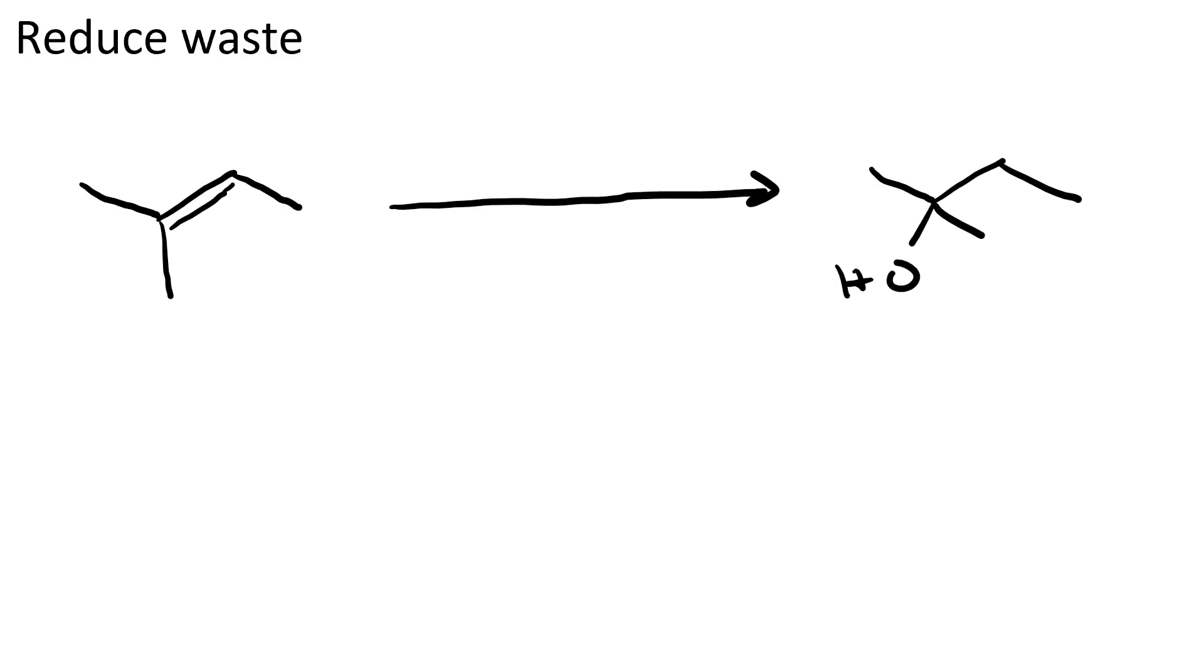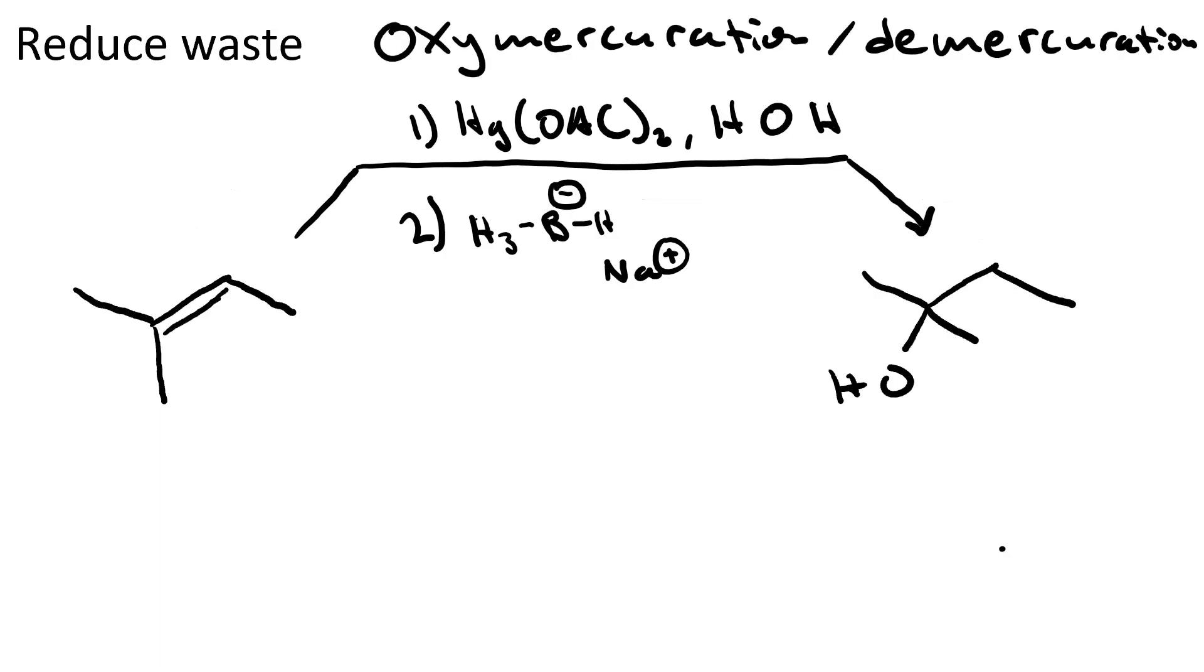Here's an example of a strategy to reduce waste. Let's say we've got this asymmetric tri-substituted alkene and we want to produce the Markovnikov alcohol. One way to get a Markovnikov alcohol from an alkene is via oxymercuration demercuration. In the first step we use mercuric acetate and water and in the second step sodium borohydride.